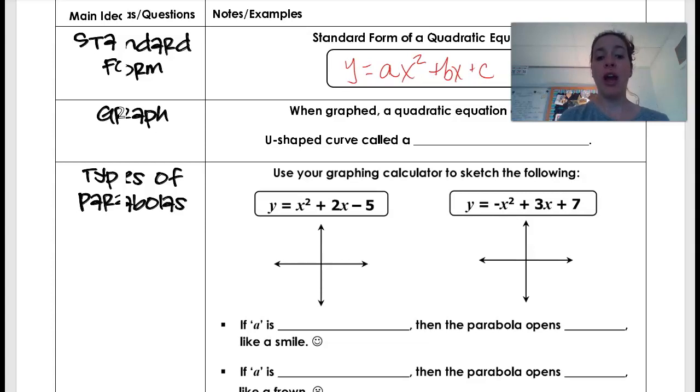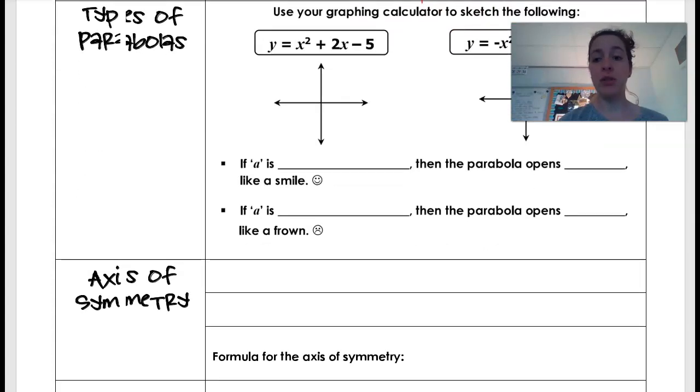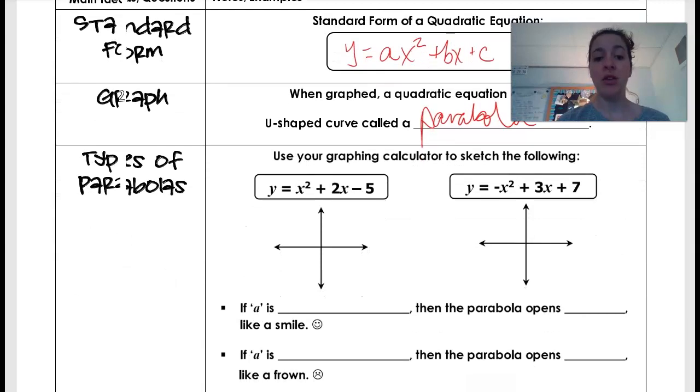So when I graph this thing, it's a u-shaped curve that's called a parabola. And we'll look at several of these in just a few minutes. So we can have several different types. So you can use your graphing calculator or Desmos, and we're going to sketch these kind of examples. And I'll explain a couple of things to you. So when I graph this, I see that it ends up looking something like this. And my graph and my curve just continue up in both directions.